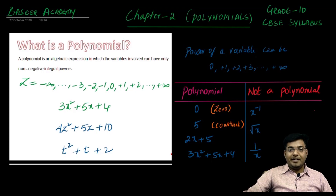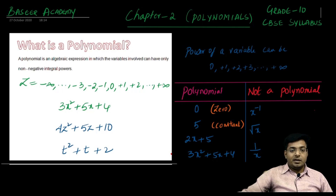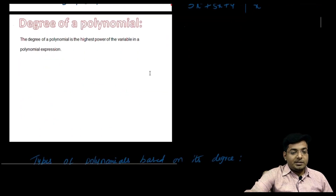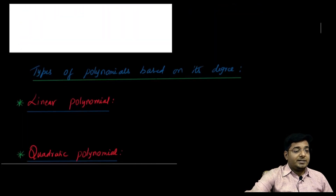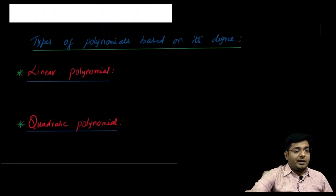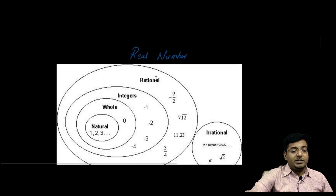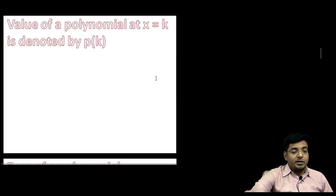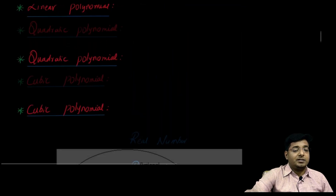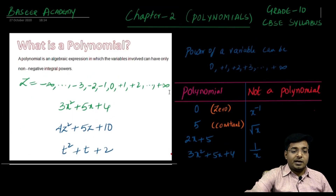Hi, my name is Basir. In this video, we'll be learning chapter 2 polynomials from grade 10 CBSE syllabus. We'll learn what a polynomial is, what is the degree of a polynomial, and what types of polynomials we have based on its degree. We will learn how to find the value of a polynomial and lastly, how to find the zero of a polynomial. So let's get started.